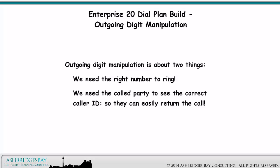Outgoing digit manipulation is about two things: we need the right number to ring, and we need the called party to see the correct caller ID so they can easily return the call.